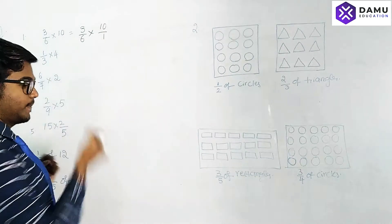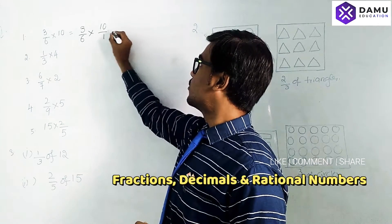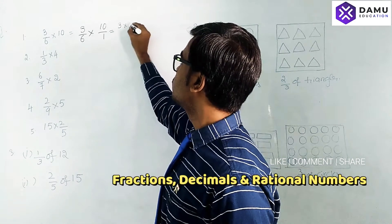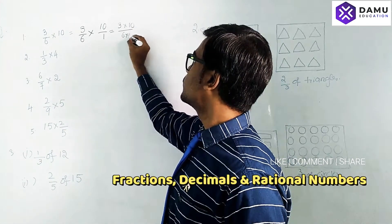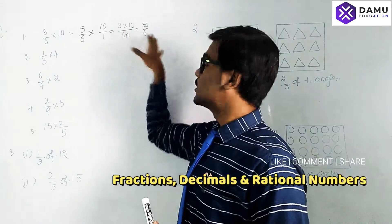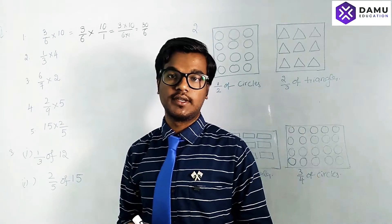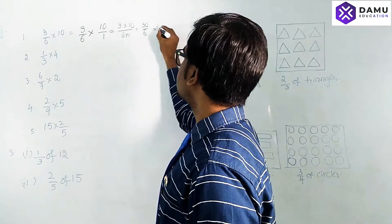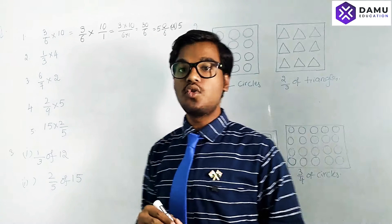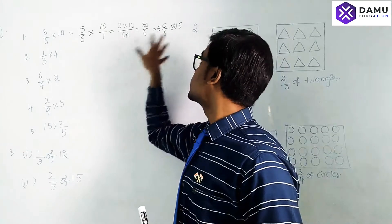So 3/6 into 10 — we write 10 as 10/1. The numerators are 3 and 10: multiply to get 30, and 6 × 1 = 6, giving 30/6. To express as a mixed fraction, the nearest multiple of 6 is 30, so 5 × 6 = 30 plus 0, giving 5 and 0/6, which is simply 5.